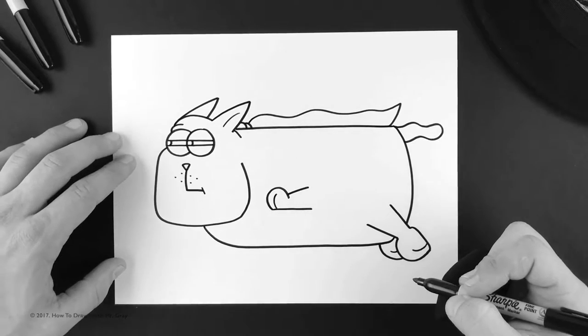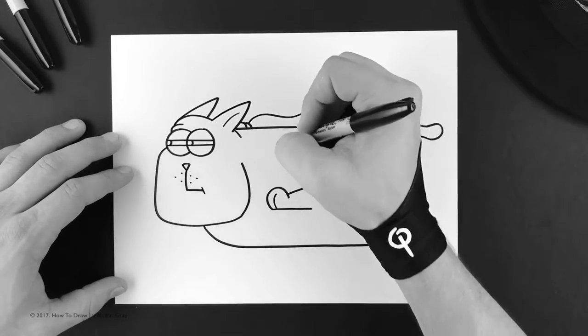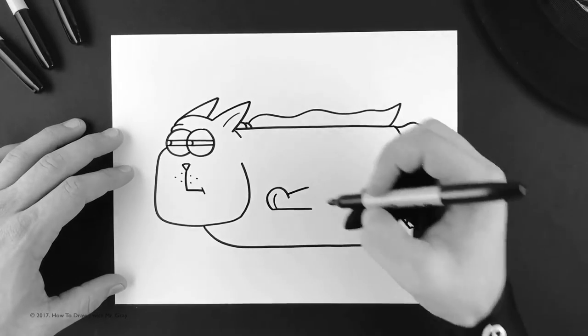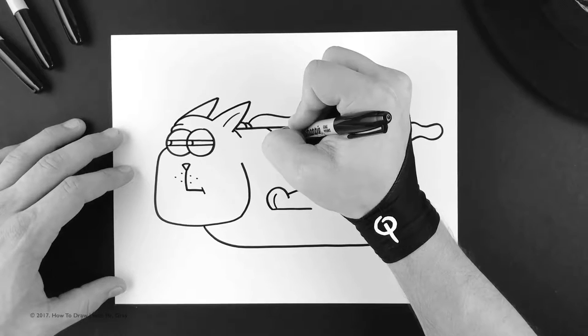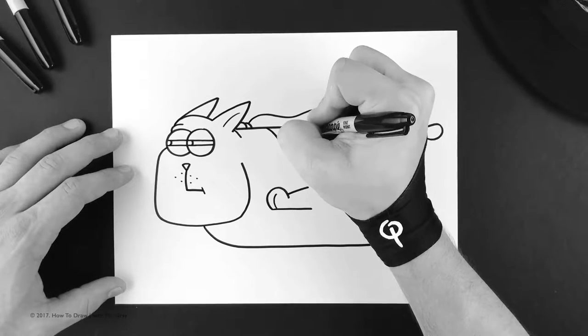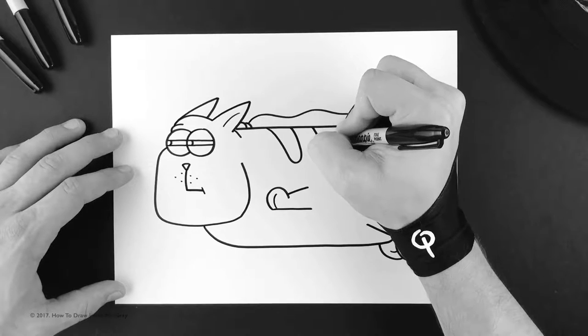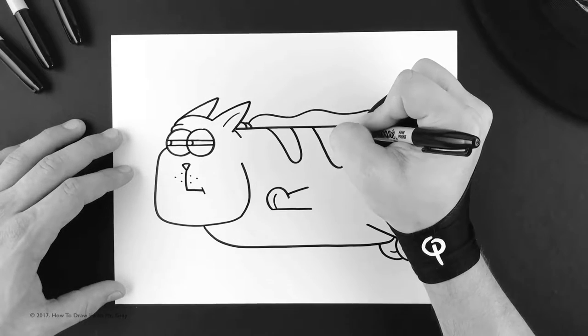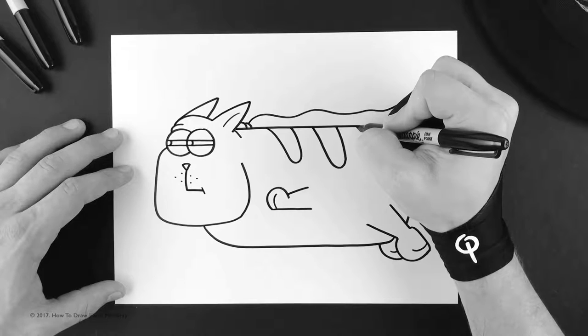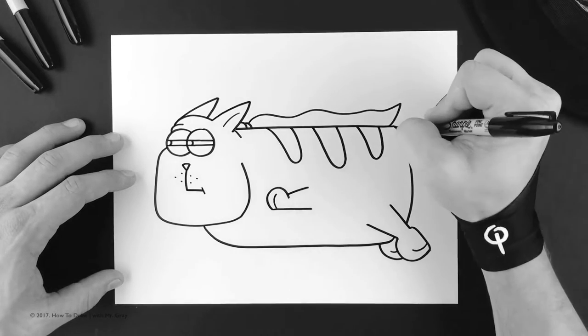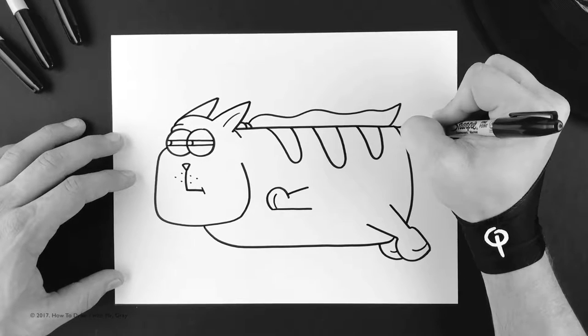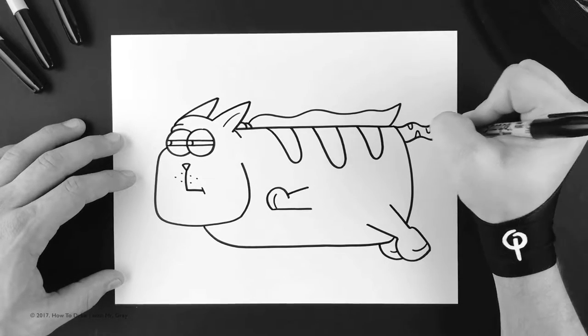And now just to give him a little bit more detail, let's give him three stripes. So we're going to do three looping stripes on his back. So come down, come up, down—really big use. You can even put, if we wanted, little small ones on his tail. Why not?